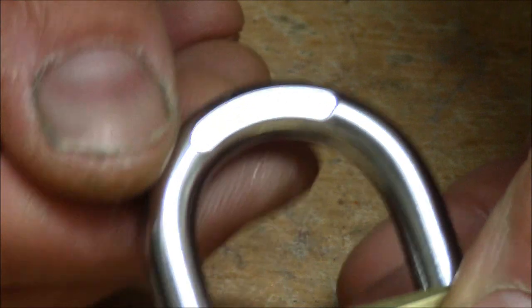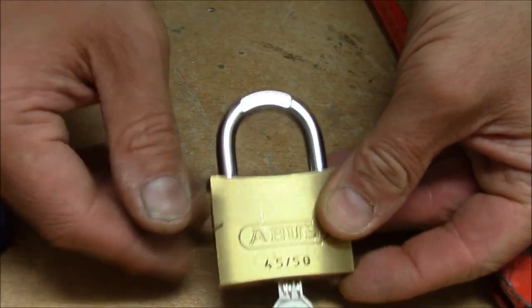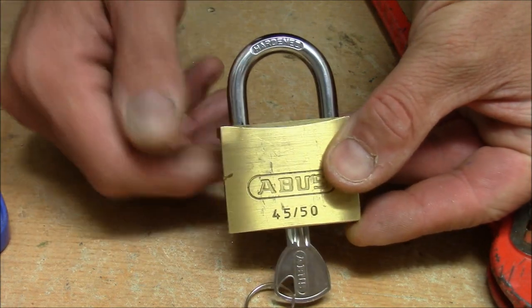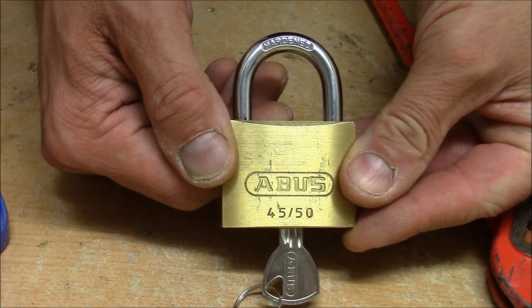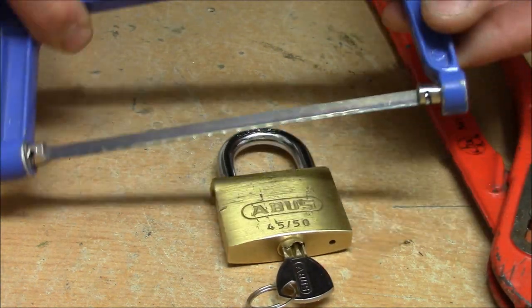So in this case, in the case of the Abus 4550, this shackle seems to be really good hardened and you have no chance to get through with one of these little metal saws.